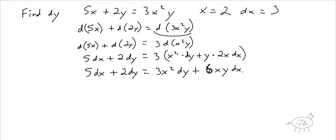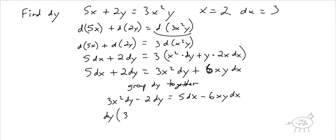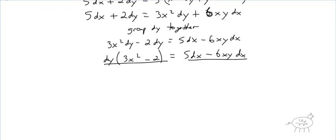And, I'm trying to solve for dy, so let's move stuff over. Group dy together. Okay, we've done that in the past. What I'm going to do is I'm going to move 2 dy over. So, I get 3x squared dy minus 2 dy equals 5 dx minus 6xy dx. Okay? And then, of course, you can factor dy out of here. So, I get dy times 3x squared minus 2 equals 5 dx minus 6xy dx. Okay, so let's keep going here. Divide both sides by 3x squared minus 2. So, dy is equal to 5 dx minus 6xy dx all over 3x squared minus 2.